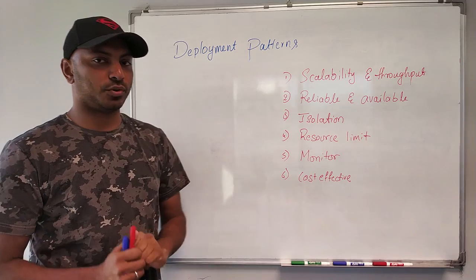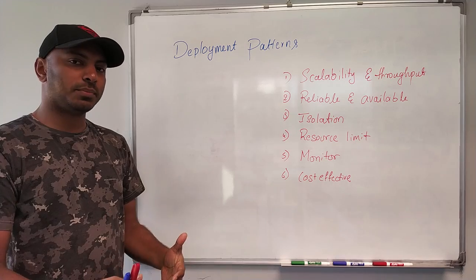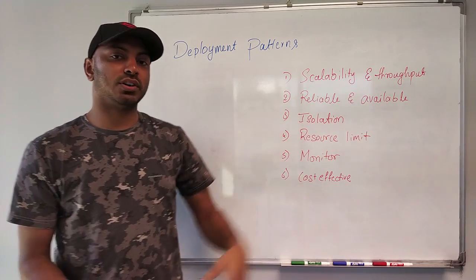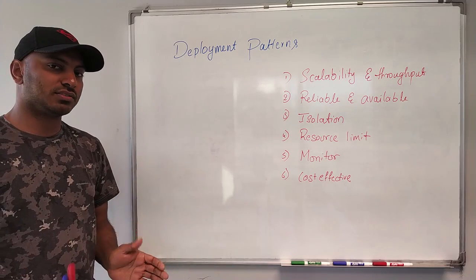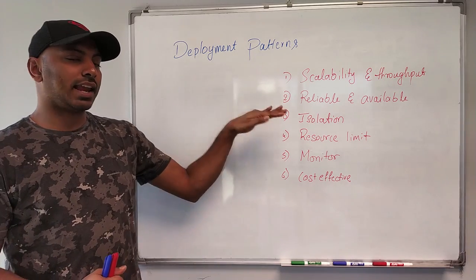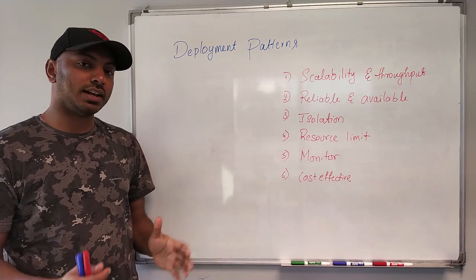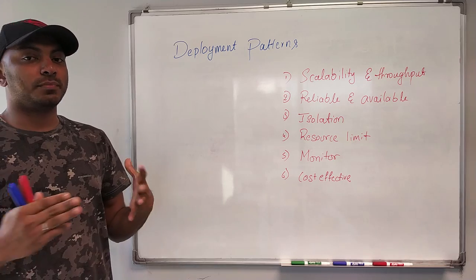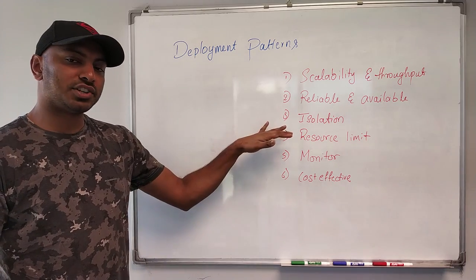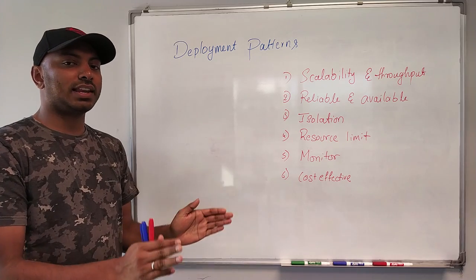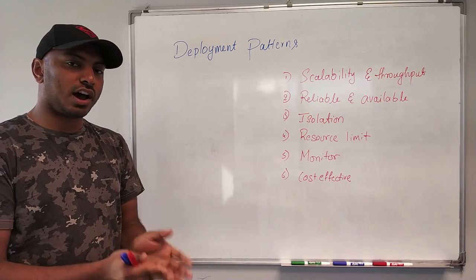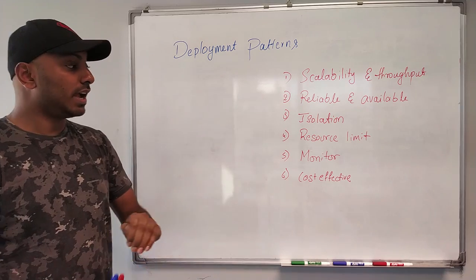The first deployment goal is scalability and throughput. We definitely have to think about scalability because we need to scale our applications up or scale out. The next thing is reliability and availability — we are building microservices for a reason: we need our application to be highly available and to behave reliably. The third goal is isolation — when we are deploying our services, one service shouldn't affect or disturb the other services.